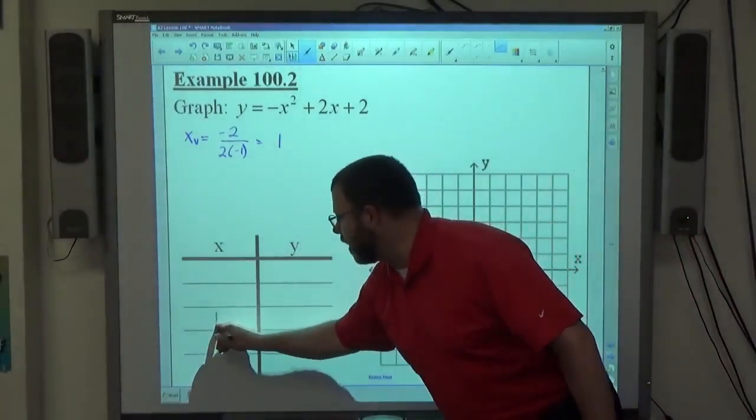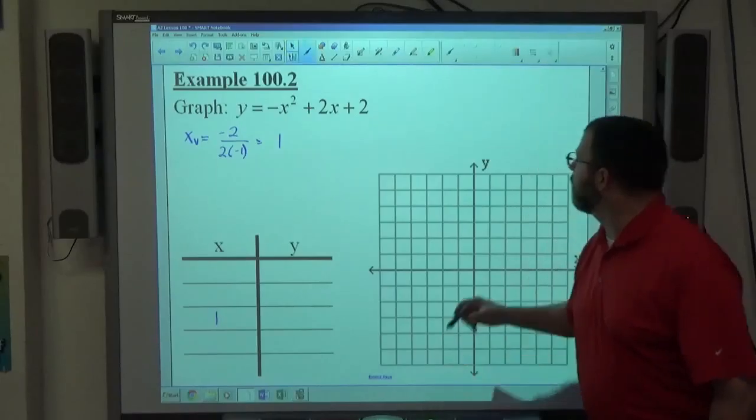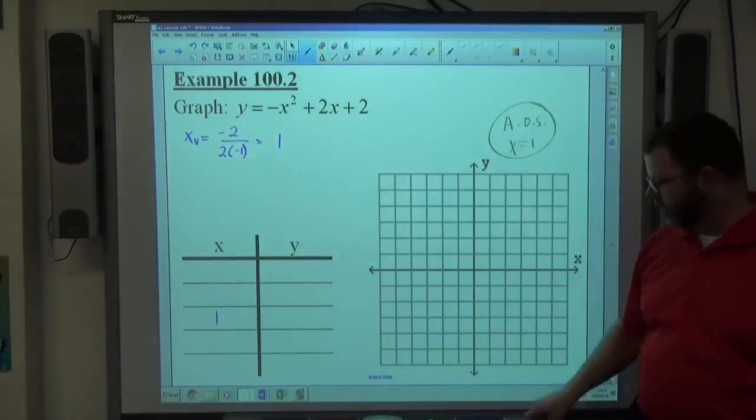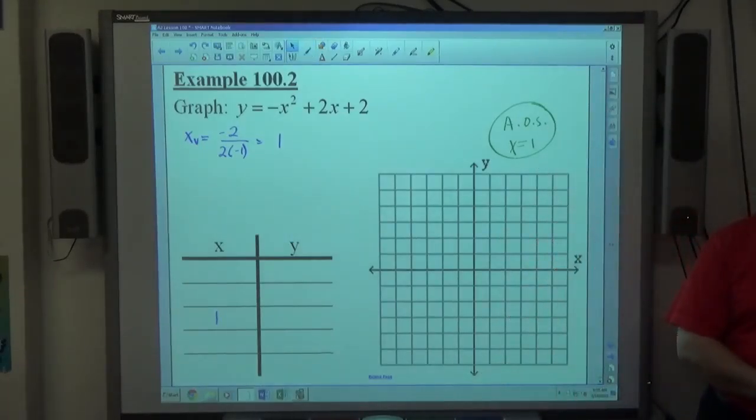So the x value of my vertex is positive 1. It also means right off the bat, watch what I do. AOS x equals 1. As soon as I know what the x value of the vertex is, that's the axis of symmetry equation, x equals that number.